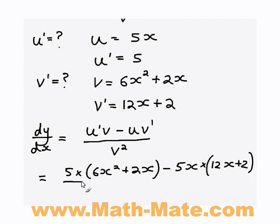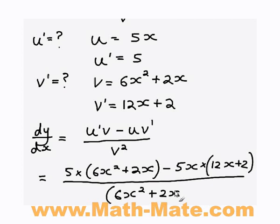Now we get to do the bottom of it, which is v squared. So we know that v equals 6x squared plus 2x. And where it's v squared, so we have to make this all squared. So now our job is just to simplify this as much as possible.